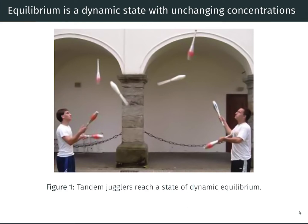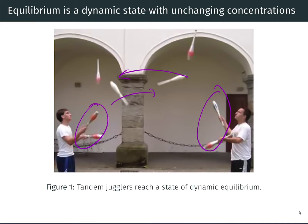Here's another metaphor for dynamic equilibrium: tandem jugglers. In either of the jugglers' hands at any given time, let's say there are two pens. But if you watch the jugglers in action, of course there are many, many pens crossing back and forth between them over a period of time. So the rates of pens moving left to right and right to left are clearly non-zero — things are still happening — but the rates of pens moving are equal to each other.